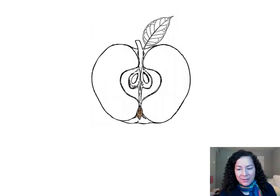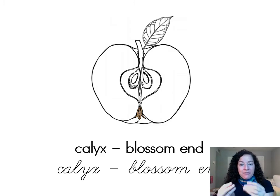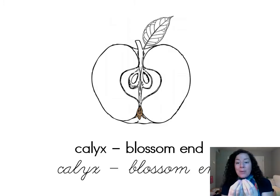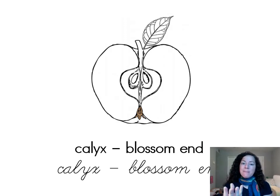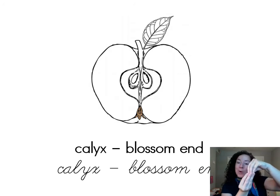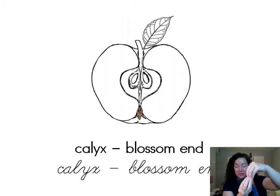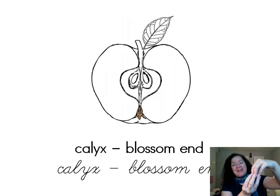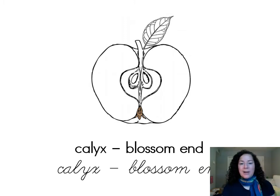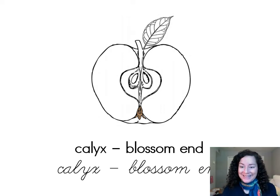Here at the very bottom of the apple, we have the blossom end. When we look at a flower, this is the calyx. Remember that within the calyx, we have the ovary, and once the ovary has been fertilized and the fruit ripens and grows, what we have left is that blossom end — and so that's the calyx.